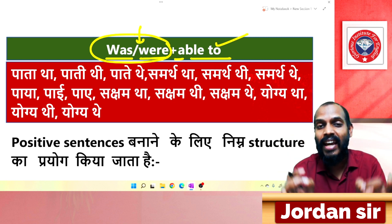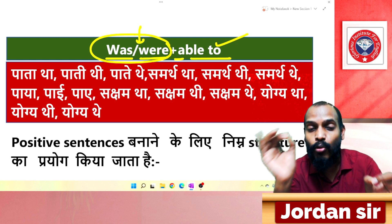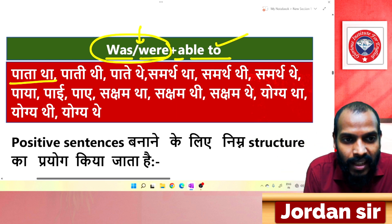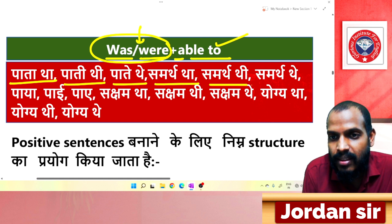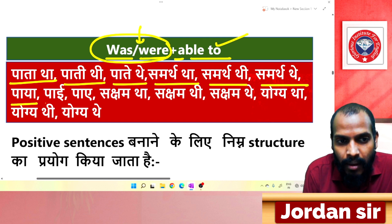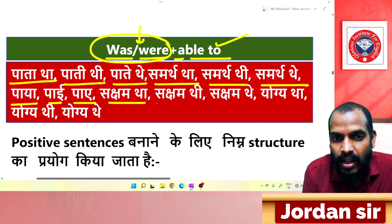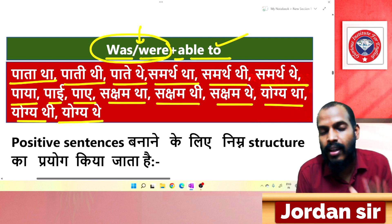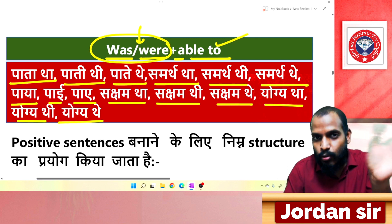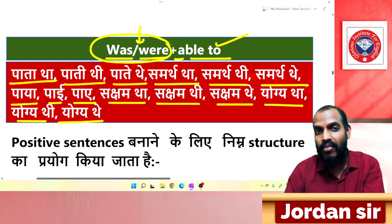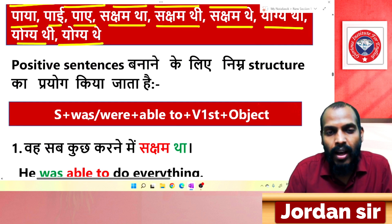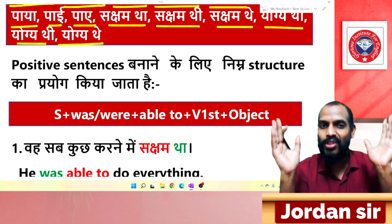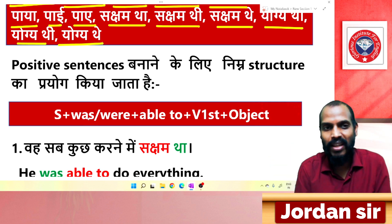Now let's understand how to identify these sentences. The Hindi endings like 'पाता था', 'पाती थी', 'पाते थे', 'समर्थ था', 'सक्षम था', 'योग्य था/थी/थे' all indicate past ability. These sounds at the end of a sentence tell us to use 'was/were + able to'.